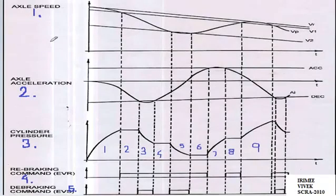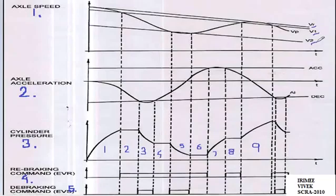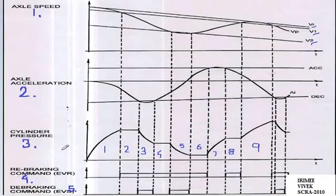This is the graphical depiction of the working of control logic. Graph 1 shows axle speed variation with respect to time. The parameters depicted are: Vr — reference speed, indicative speed of the vehicle equal to the speed of the fastest axle; V1 — upper threshold speed, above which the axle loses adhesion; V2 — lower threshold speed, below which the axle starts skidding. Graph 2 shows acceleration and deceleration values variation with respect to time. Graph 3 shows brake cylinder pressure variation with respect to time, which is regulated by the wheel slide protection in response to which axle speed and axle acceleration values are altered.